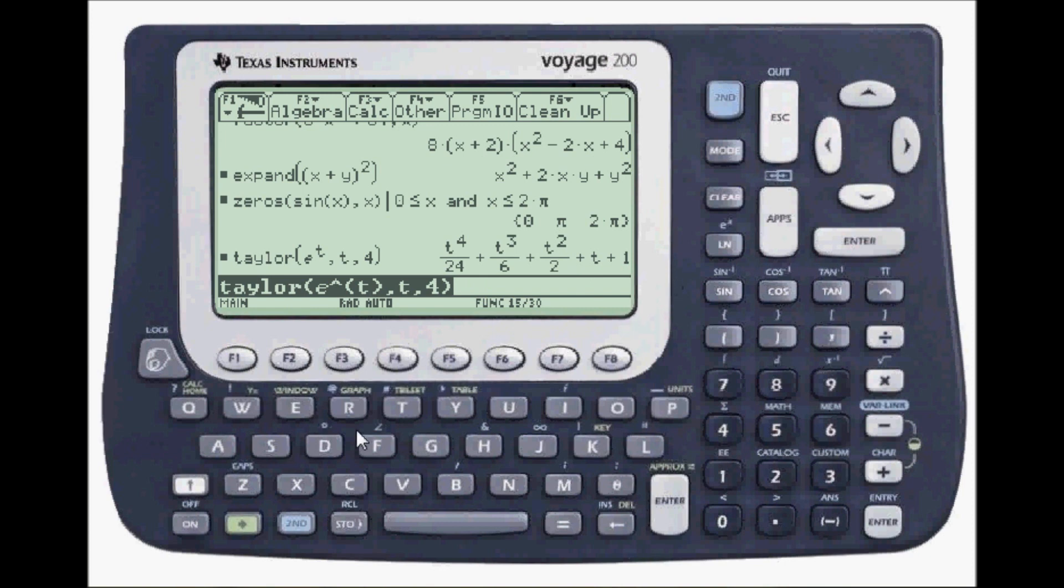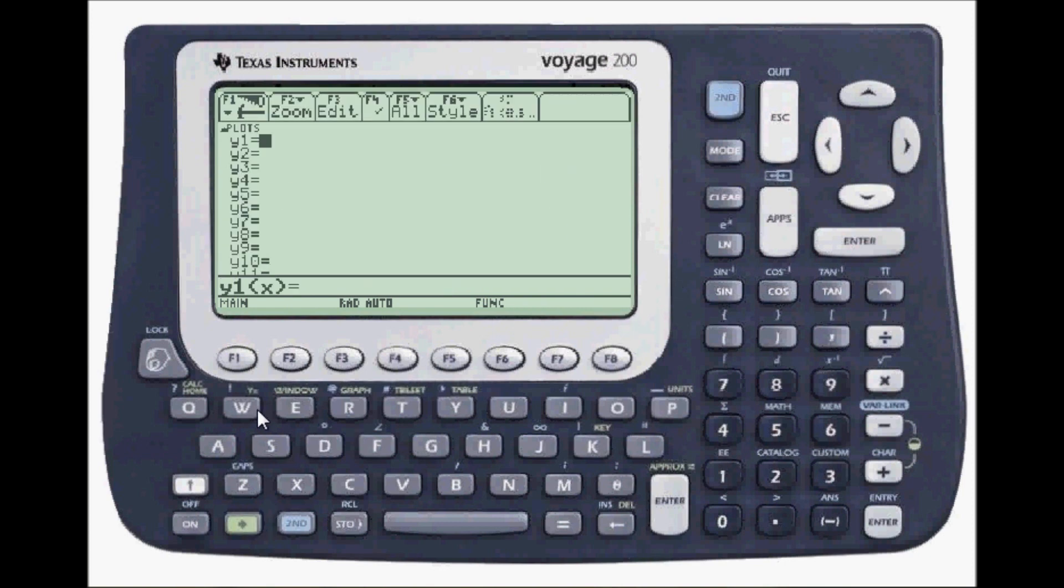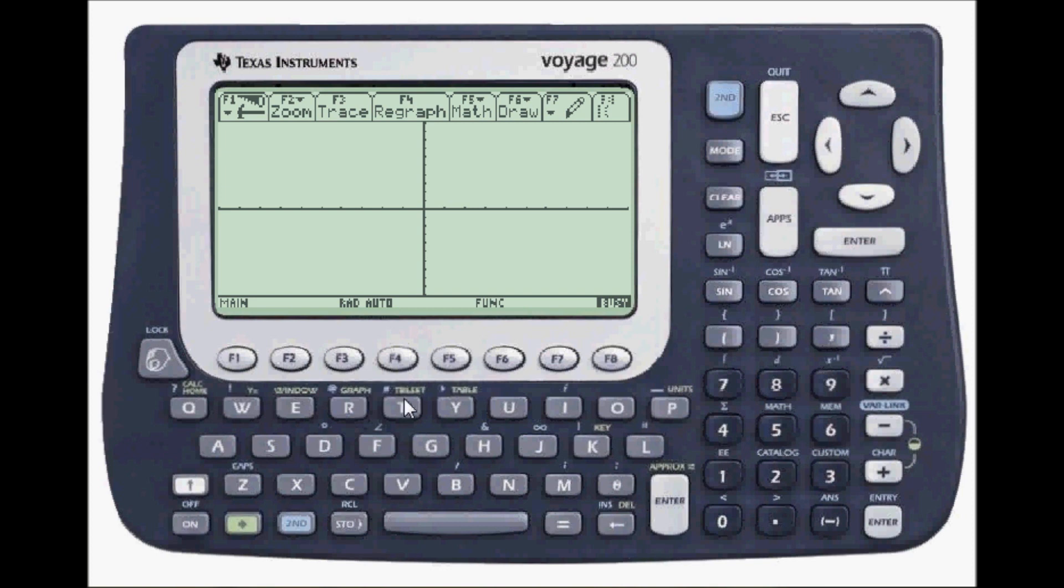Now I'm going to go to graphing. So, let's go to y equals. I'm in function form. I'm going to plot something simple. x squared. Press enter. To graph, press the green diamond key. And here. It will say busy here in the lower right hand corner.